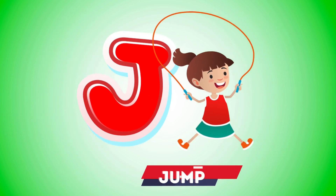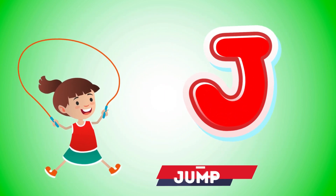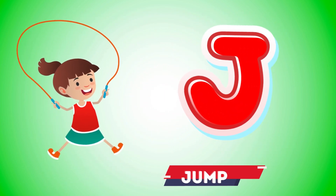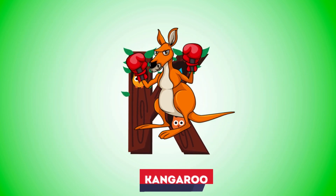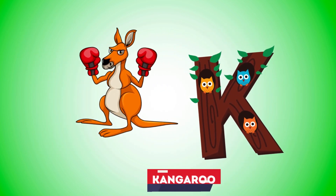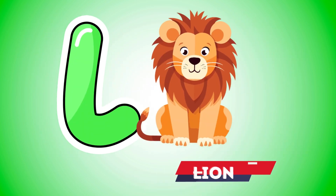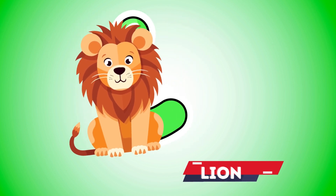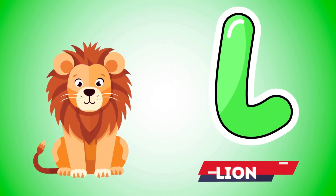J is for jump, j-j-jump. K is for kangaroo, k-k-kangaroo. L is for lion, l-l-lion.